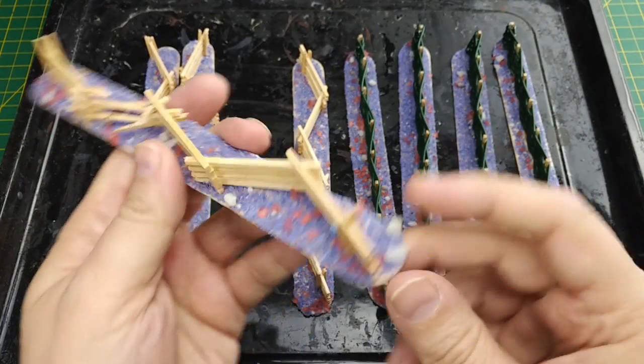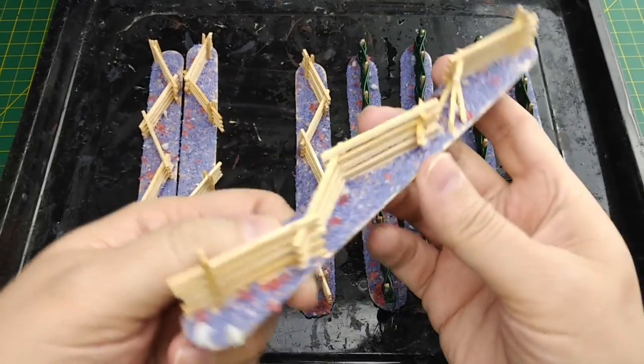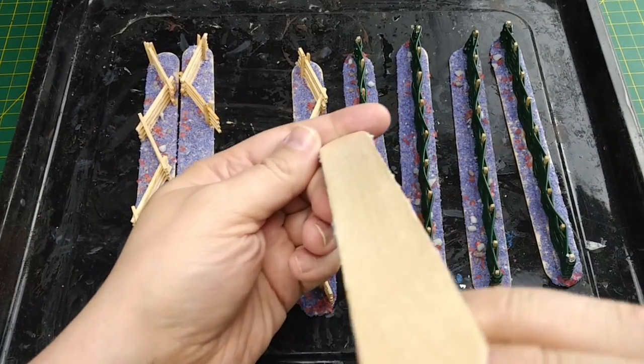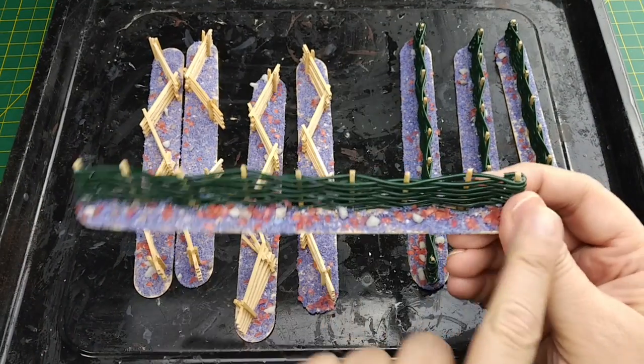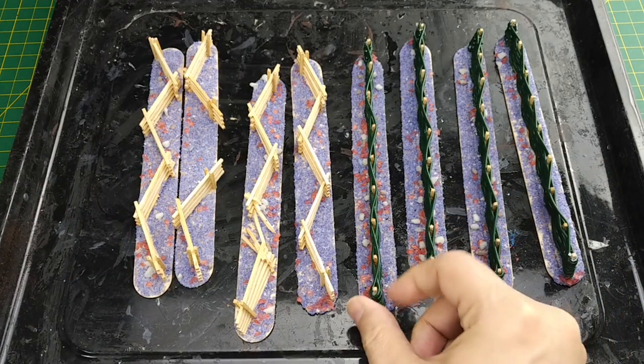I let the fences dry overnight and our aggregate is well bonded to the base. I can wiggle the larger rocks and there is no give to them. We can also see that there is little to no warpage on the wooden base. The same applies to our wattle fences. The aggregate is securely glued and the base didn't warp.